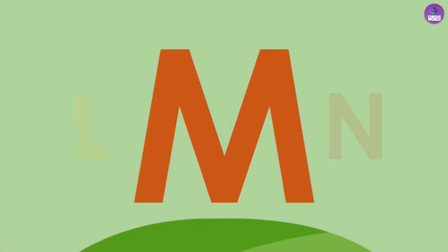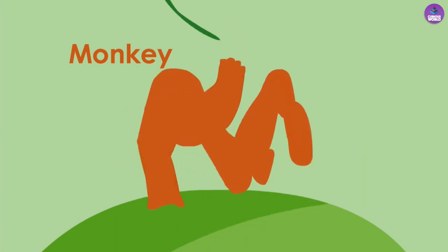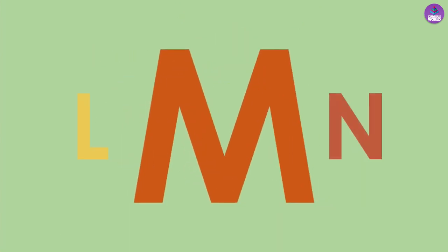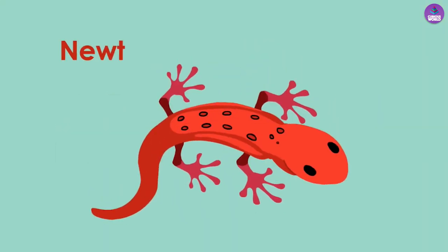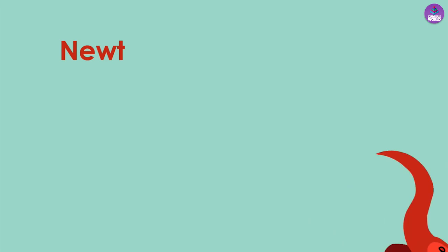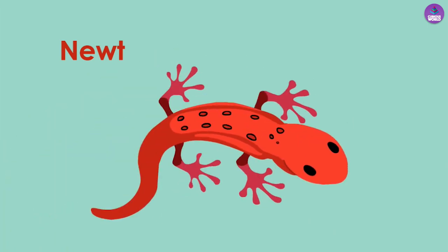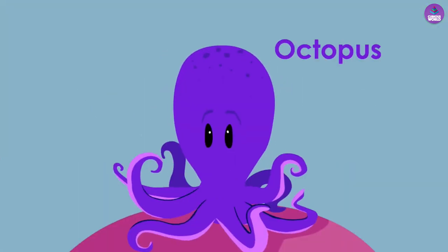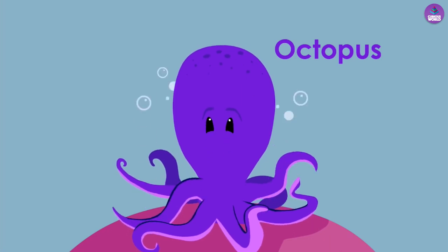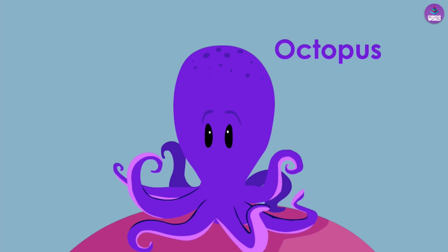M is for monkey. M. N is for newt. N. O is for octopus. O.